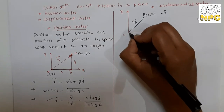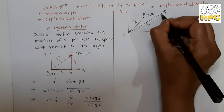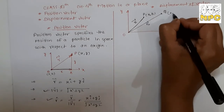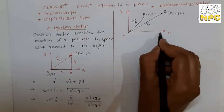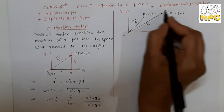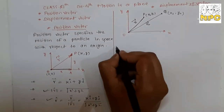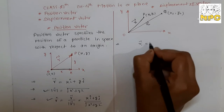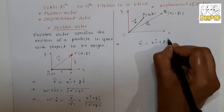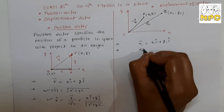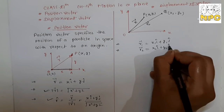Point Q has position coordinate r2, with components x2 and y2. So r2 vector = x2·i-hat + y2·j-hat.